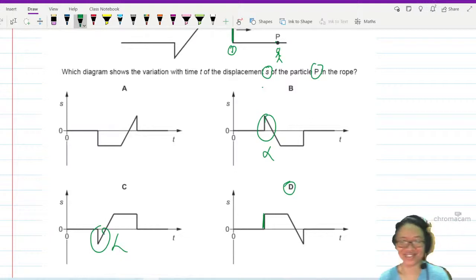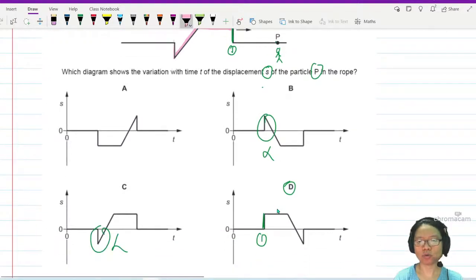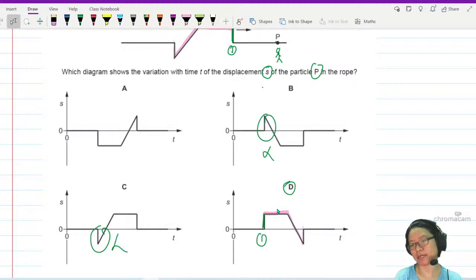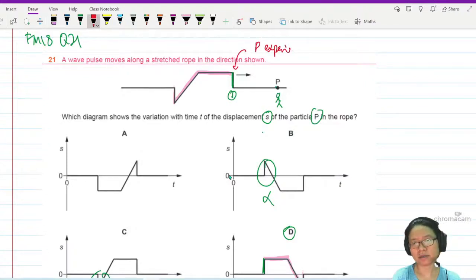Yeah, so this point position one. Okay, then followed by position two, then three, then four. So it will go straight, then go down diagonally, then come back up again. So P experiences this first.